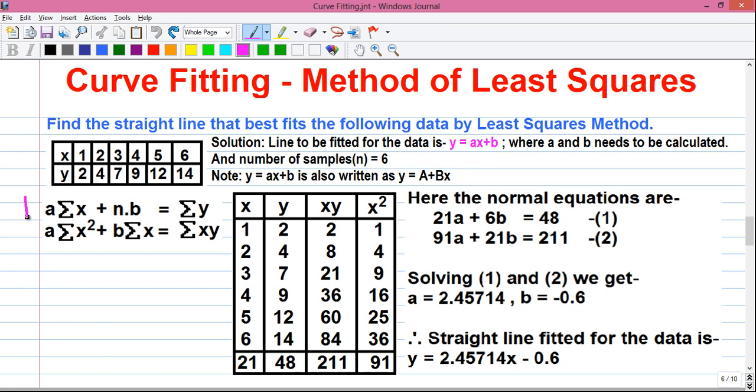So for Least Squares method, we have to remember these two formulas. They are very easy. I will explain it to you. So our first formula: a·Σx + n·b = Σy. And number 2 formula: a·Σx² + b·Σx = Σxy. So that I have written here. I have made four columns.